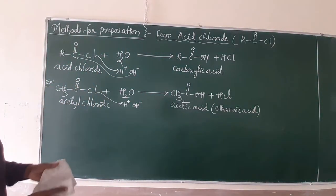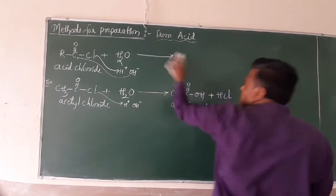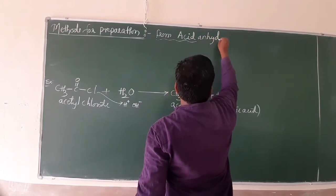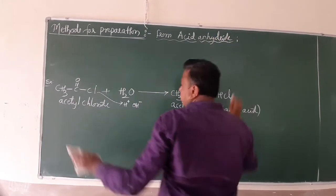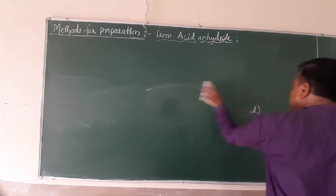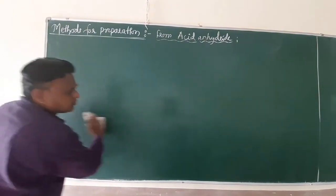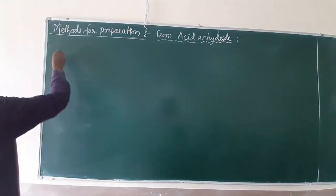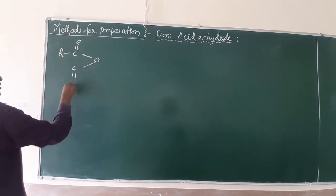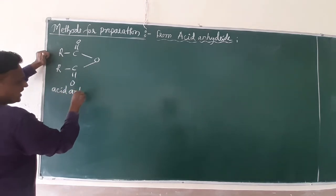Apart from acid chloride, the next reaction in our syllabus involves acid anhydrides. 'Anhydride' means removal of water. The general formula of acid anhydride is R-C(=O)-O-C(=O)-R, where two acyl groups are connected through an oxygen bridge.